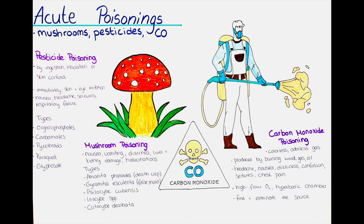Mushroom poisoning is another type of poisoning that can occur when a person ingests poisonous mushrooms. It is rare but can be lethal, with some cases resulting in liver and kidney failure. Mushroom poisoning can occur after collecting mushrooms in the forest or purchasing them from someone unaware of the mushroom's toxic nature. Symptoms generally include nausea, vomiting, diarrhea, abdominal pain and liver and kidney damage. The time for symptoms to develop can vary — in some cases within a few hours, in others several days.